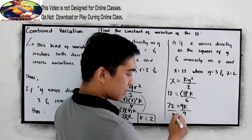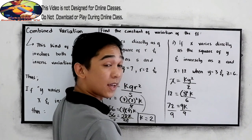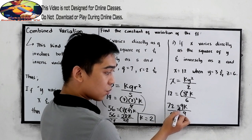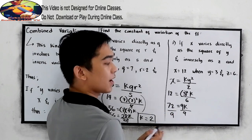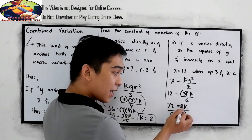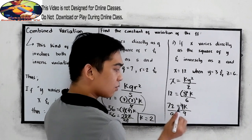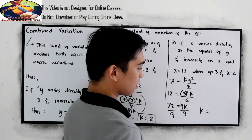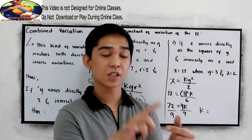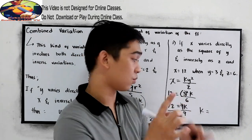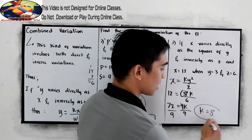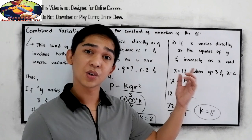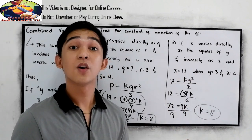Divide by 9. Again, 6 times 12 is 72, is equal to 3 squared which is 9. To find k, divide by 9. Now 72 divided by 9, k is equal to 8. So that's how to find the equation and the constant of the variation.